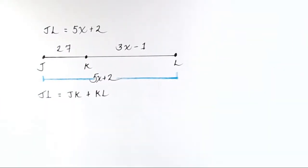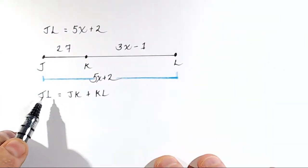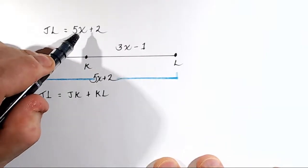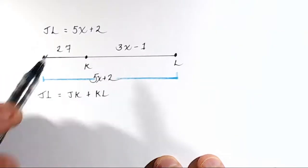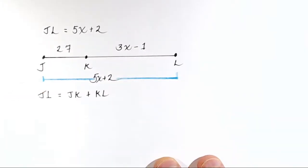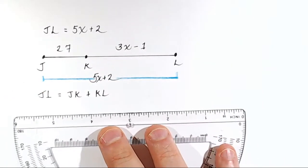And that's totally useless. So let's plug in the things we know. We know what JL is, 5X plus 2. We know what JK is, 27. And we know what KL is, 3X minus 1. So let's plug those things in.